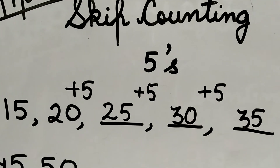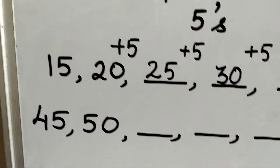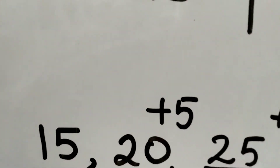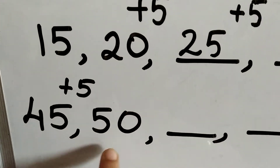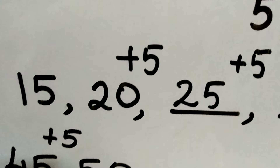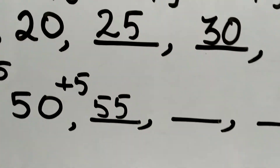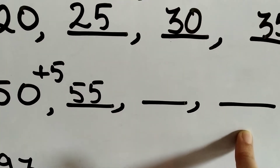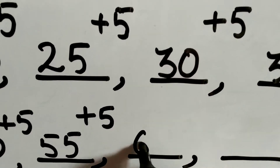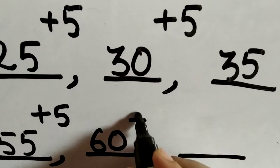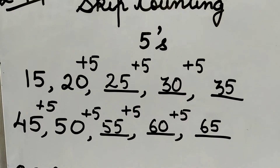And so on. In skip counting in fives you just have to add 5 each time. Now the next question: 45 and 50 — again a gap of 5. When we add 5 to 50 we get 55. Then 55 plus 5 is 60, and 60 plus 5 is 65. This is how we do skip counting in fives.